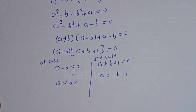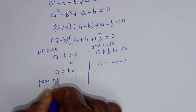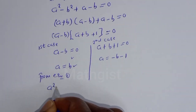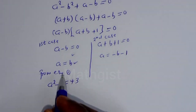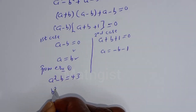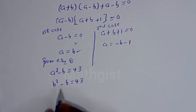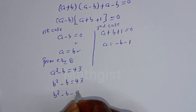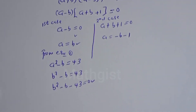Let's start with the first case. From equation 1, A squared minus B is equal to 43. Substituting A equals B, we get B squared minus B is equal to 43, so B squared minus B minus 43 is equal to 0. This is a quadratic equation, so let's solve it using the quadratic general formula.